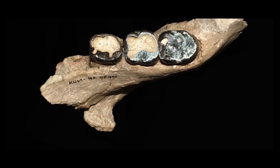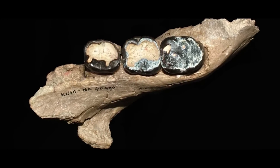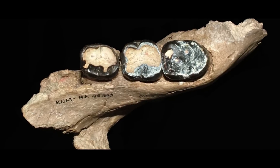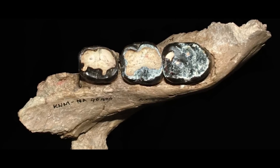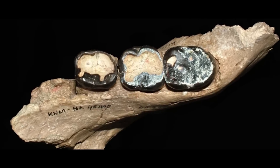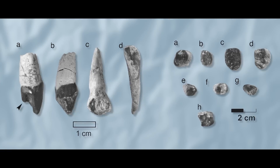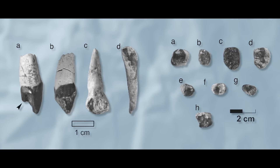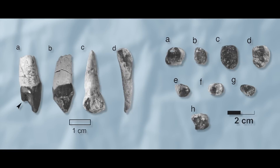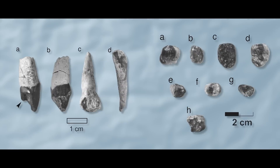The molars are heavily worn, suggesting a diet of tough stuff, or at least repeated chewing of things abrasive enough to wear the teeth down — twigs, nuts, seeds, and fruits. Based on the 11 isolated teeth found with the jaw, the canines seem to have been shorter than in other apes.